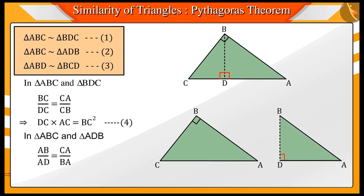Similarly, with the help of equation 2, we get AC times AD equal to AB square, which we can show from equation 5.